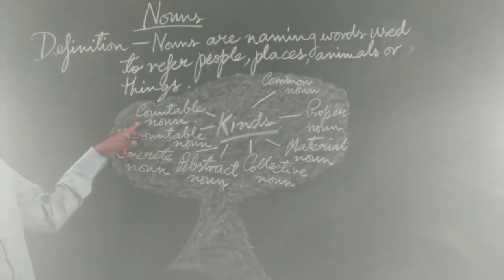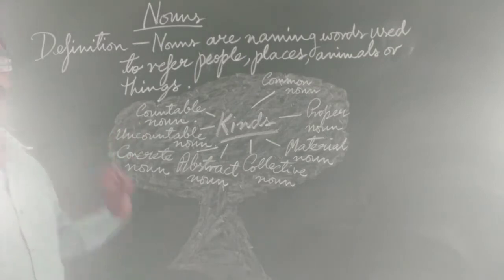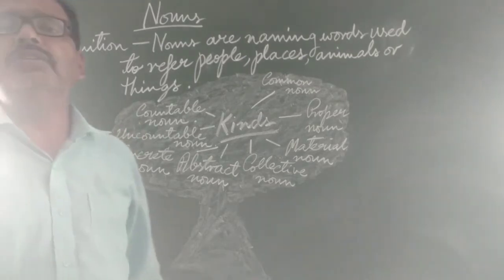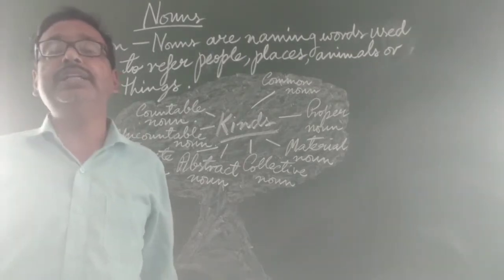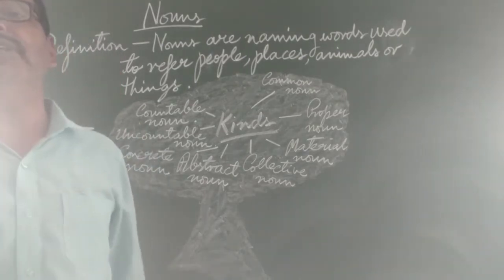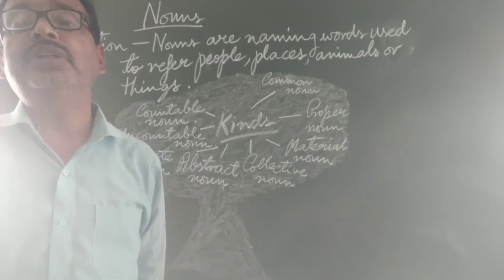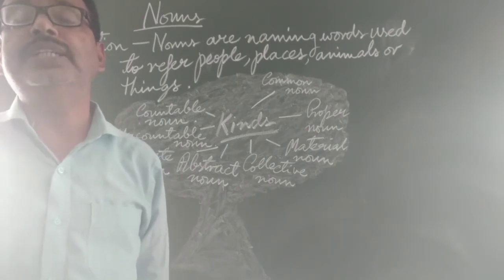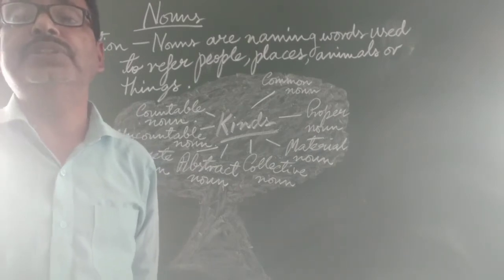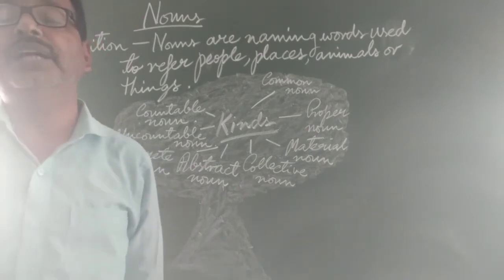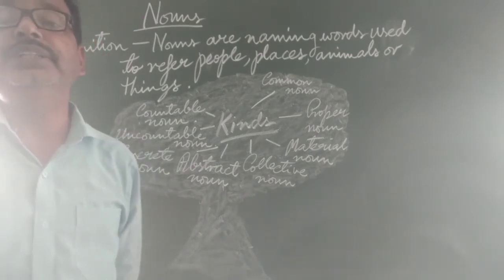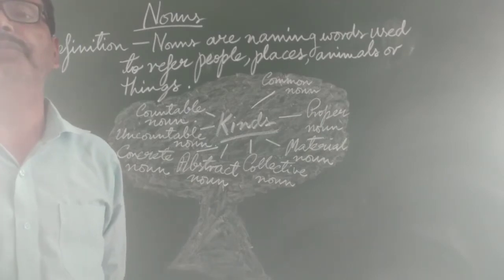And now coming to the last kind, that is a Countable Naam. As the name suggests, a Countable Naam is that which can be counted — for example, boys, girls, mangoes, apples, bananas. These are Countable Naam.